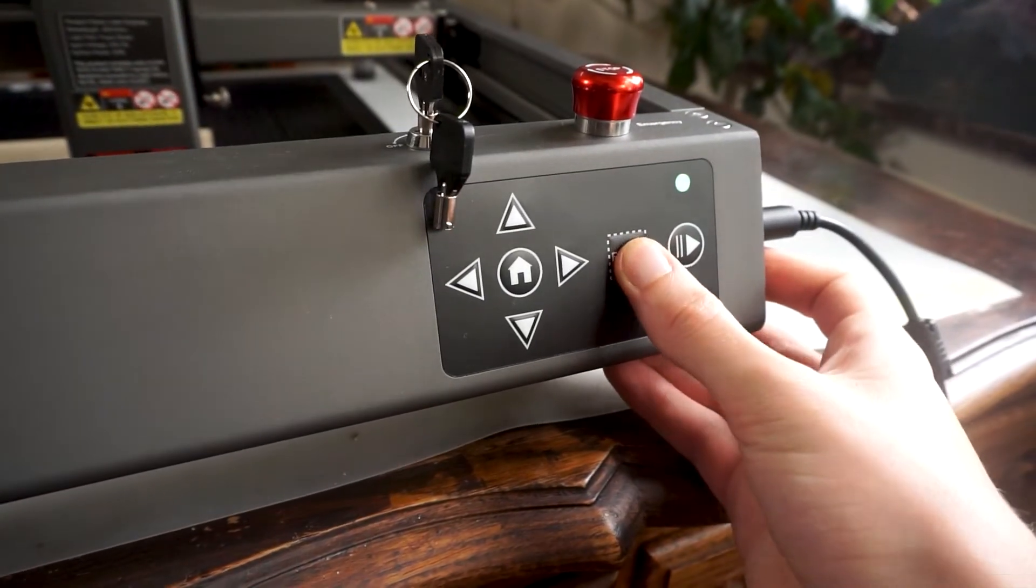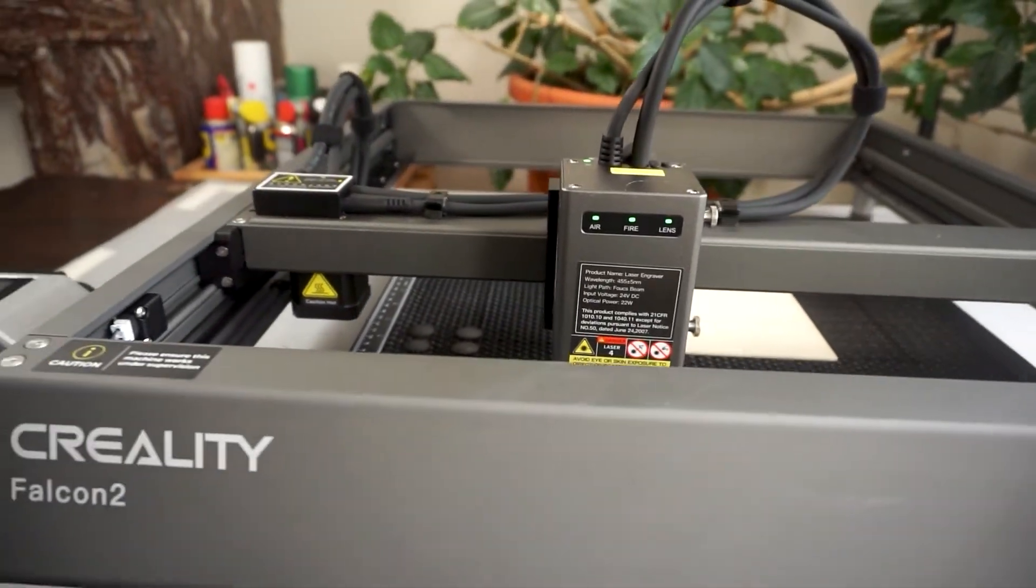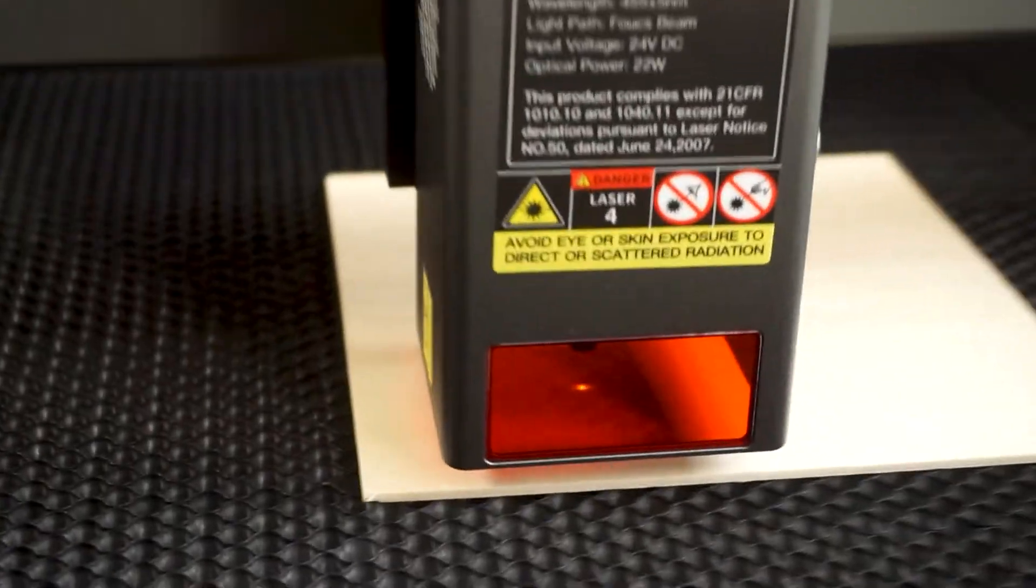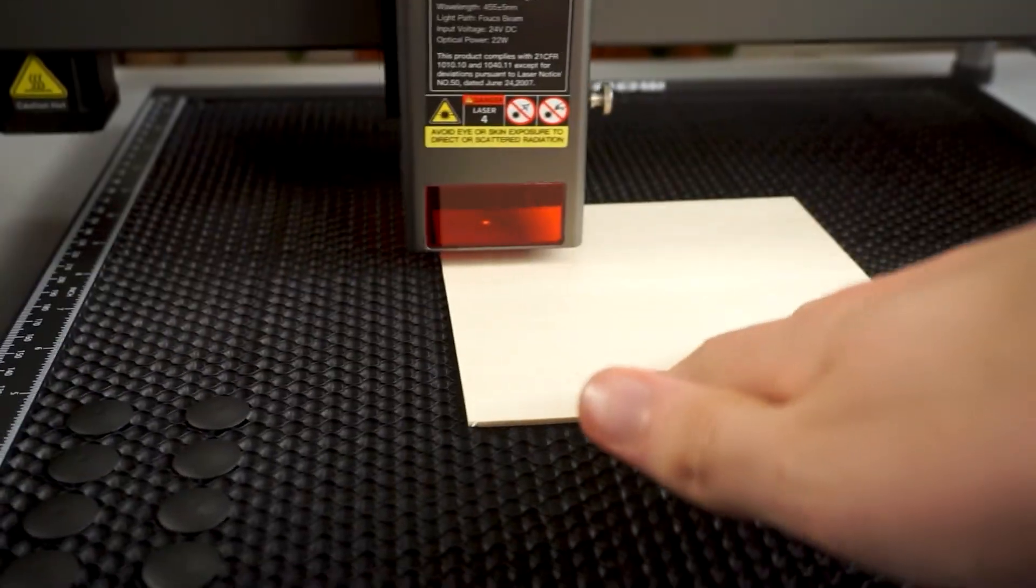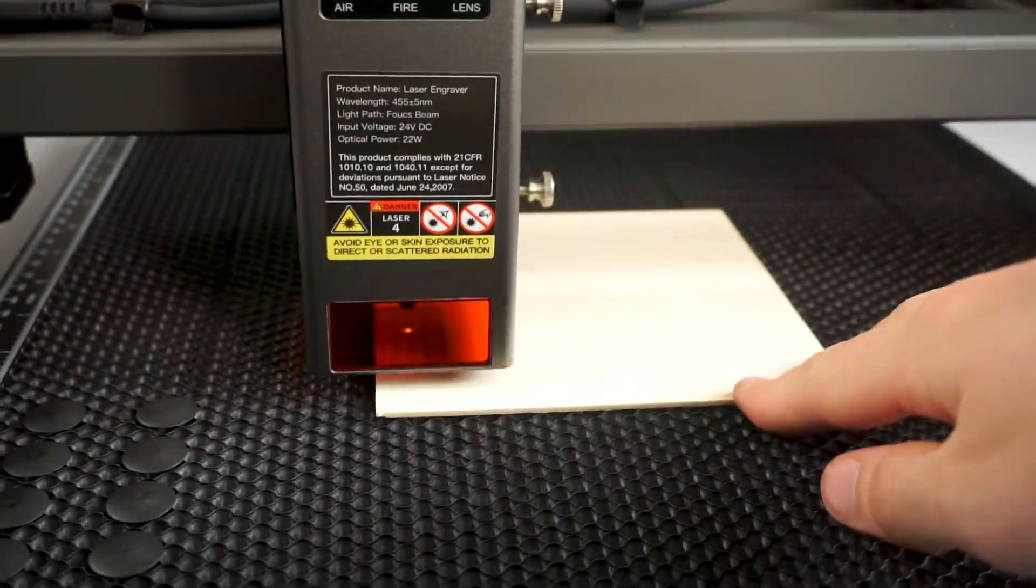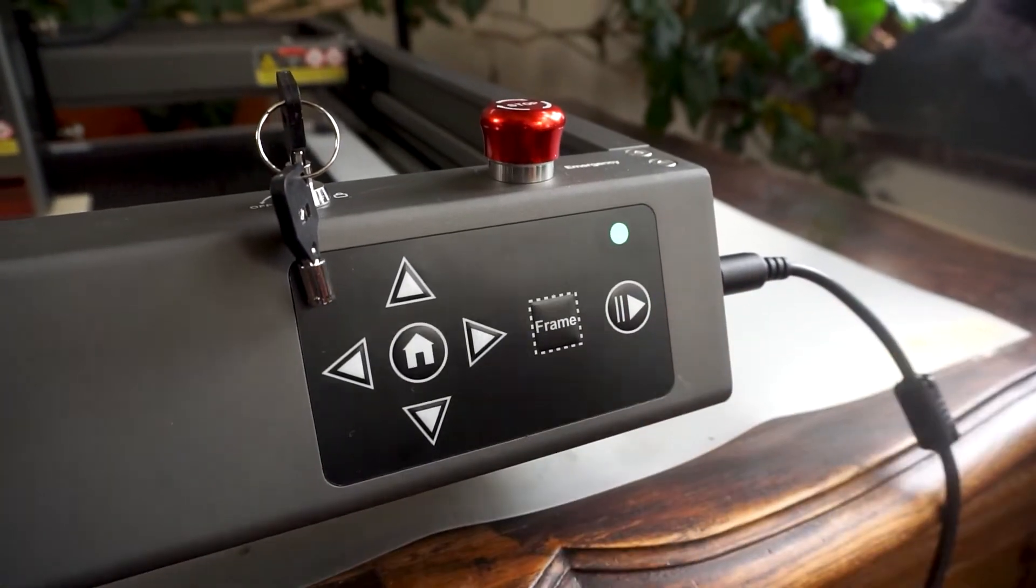Turn on the machine and press frame. The machine will then trace a visual frame where the cut will be made, so that you can adjust the position of the material and ensure that everything fits well. Confirm, and the machine does the rest.